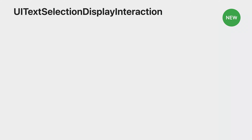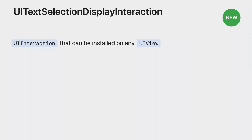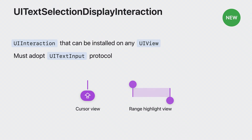UI text selection display interaction just provides the selection UI without the gestures included with UI text interaction. It's a new type of UI interaction that can be installed on any UI view. You must also provide an object that implements the UI text input protocol, which defines various methods for the interaction to obtain selection state from your view. UI text selection display interaction will then do all the heavy lifting for you, providing the cursor view and cursor accessories, as well as the range highlight and selection handles. All of these views are replaceable, so you can customize the behavior if you need to.